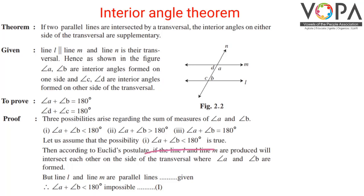Assume the first possibility — that angle A plus angle B is less than 180 degrees — is true. Then according to Euclid's postulate, if line L and line M are produced, they will intersect each other on one side of the transversal.